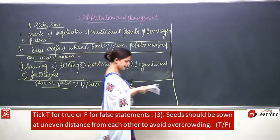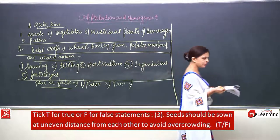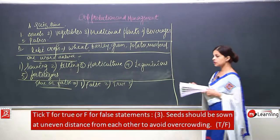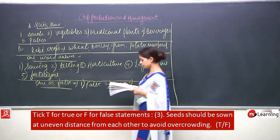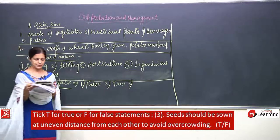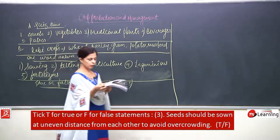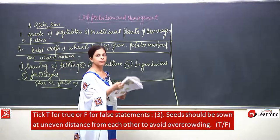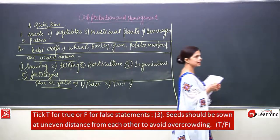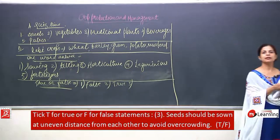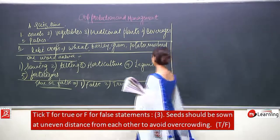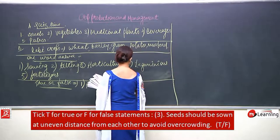Third: seeds should be sown at uneven distance from each other to avoid overcrowding — false. To avoid overcrowding it is very important that seeds have to be sown at a particular distance. We cannot just keep sowing seeds randomly.